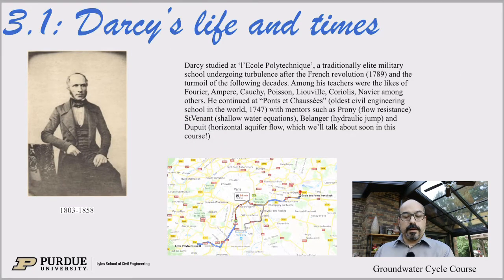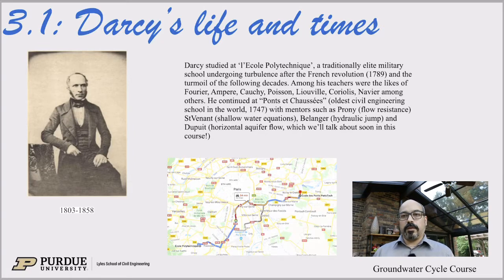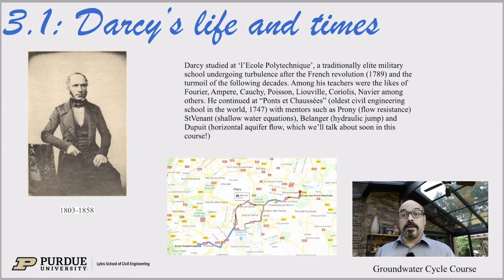Darcy studied at the École Polytechnique, which is a very prestigious military engineering school — essentially the West Point of France — where future officers would study engineering and then join the corps. Darcy was born in 1803 and started studying in the 1820s, still fresh after the French Revolution of 1789–92. There was a lot of political turmoil, and we'll see how that caused Darcy to have to move and influenced his life quite a bit.